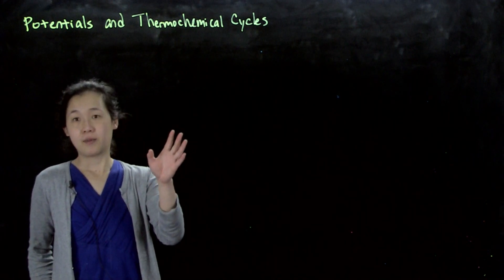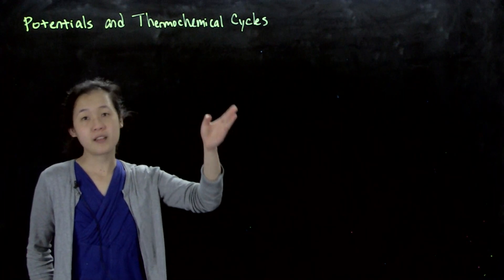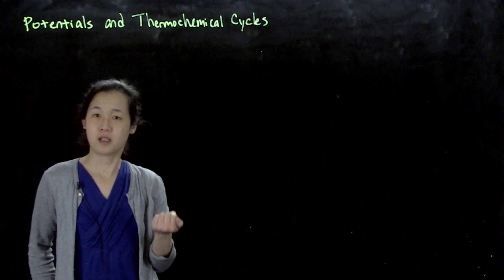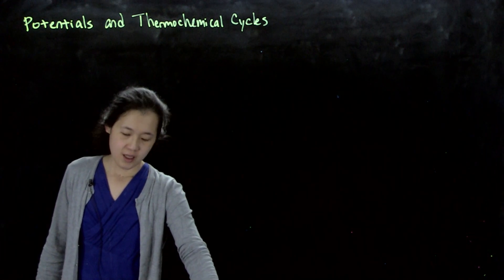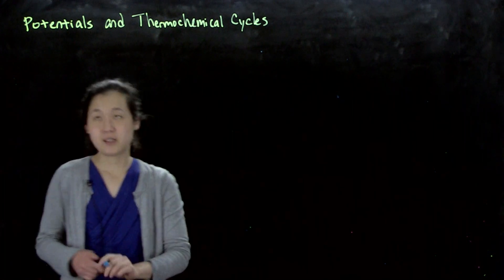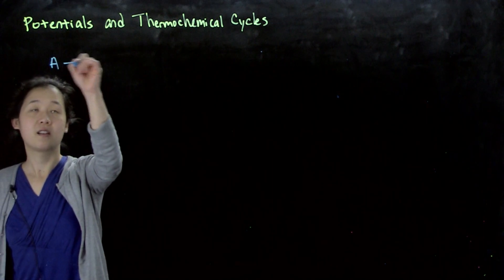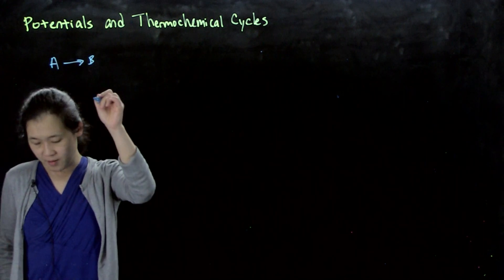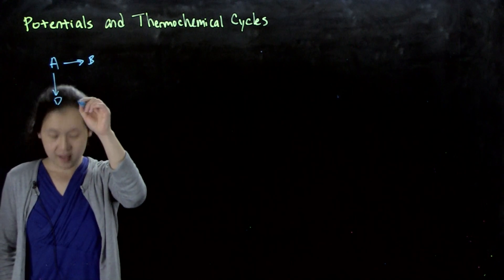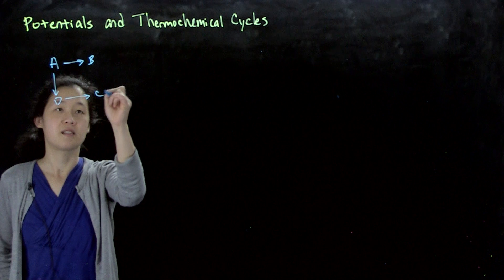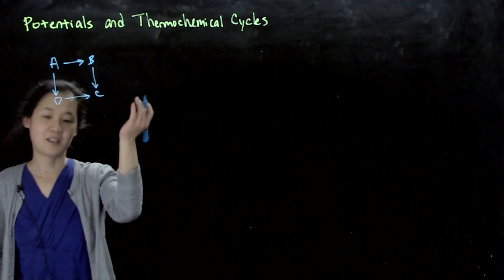We've done a little bit about this in class already, but today we'll be talking about potentials and using them in thermochemical cycles to find out more chemistry information about a reaction. What I mean by a thermochemical cycle is that if we have some reactants — more generic — A goes to B, but A also goes to D, and then D goes to C. So these are just some different reagents.